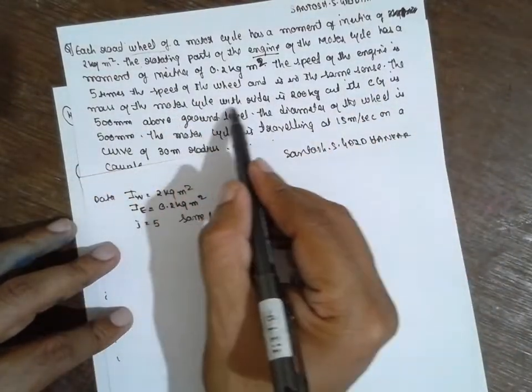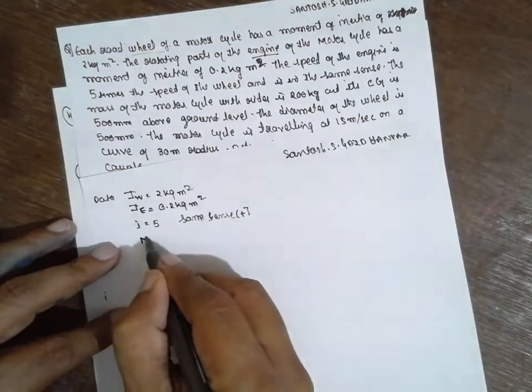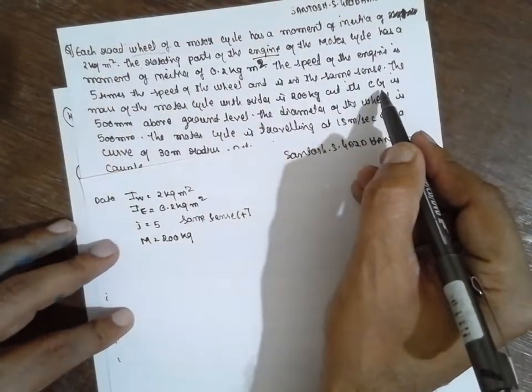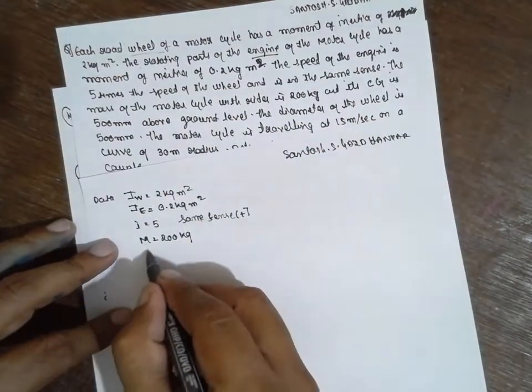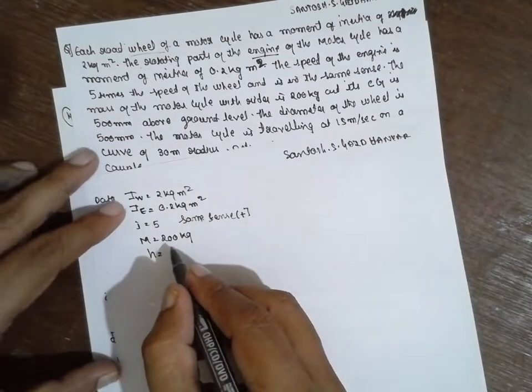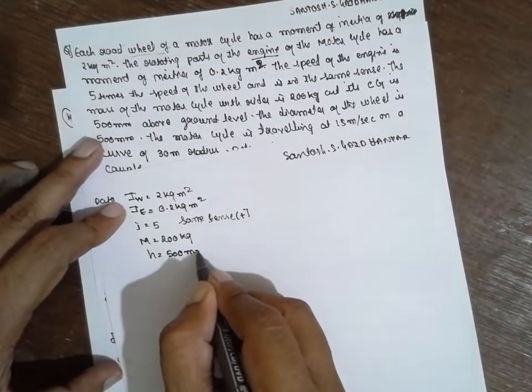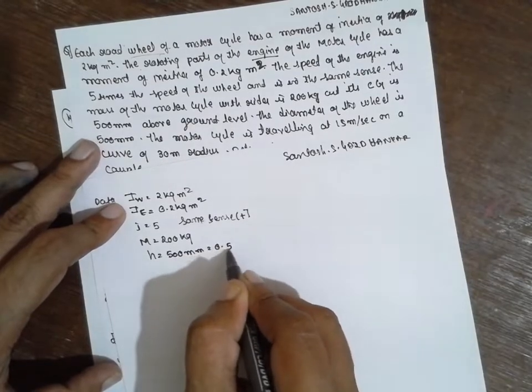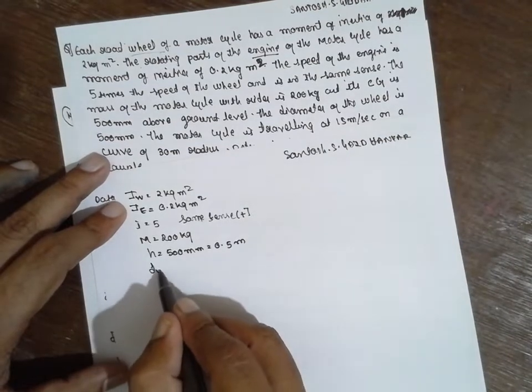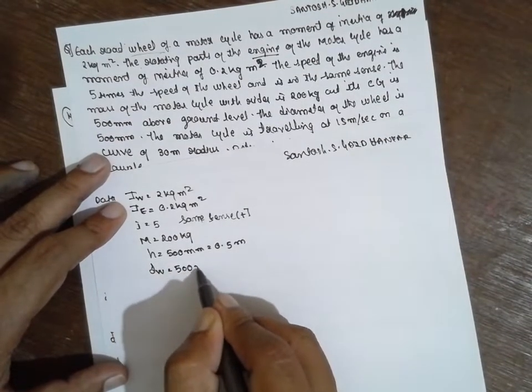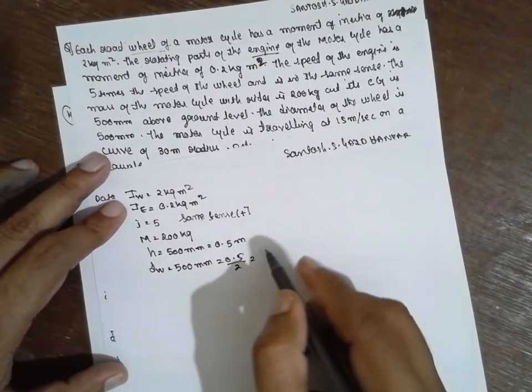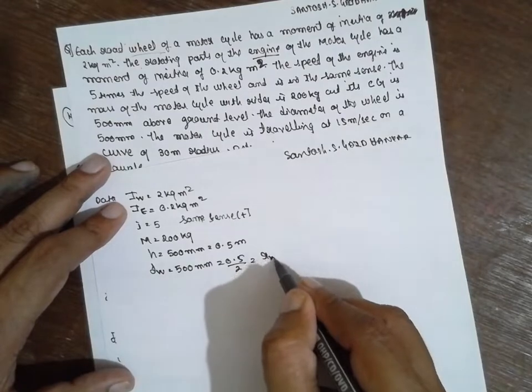The mass of the motorcycle with the rider is M, 200 kg. Center of gravity is 500 mm. Center of gravity is from the ground to center of gravity. H is 500 mm, converted to meter, 0.5 meter. We have to convert into radius. 0.5 divided by 2, Rw will be 0.25 meter.